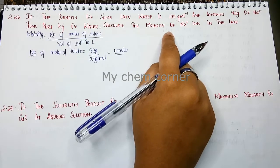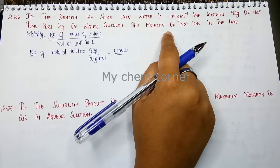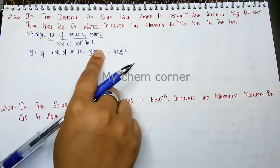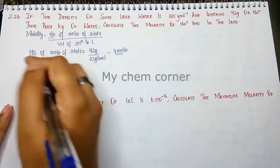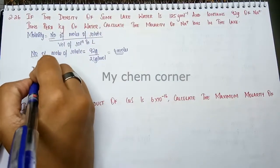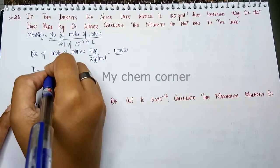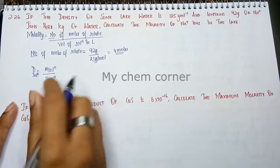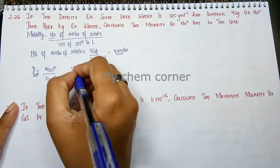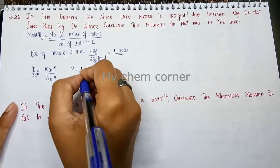So since density of solution is given, you need volume of solution. So when we write the density formula: density of solution equals mass of solution by volume of solution. You need to calculate what is volume of solution. So volume is nothing but mass by density.